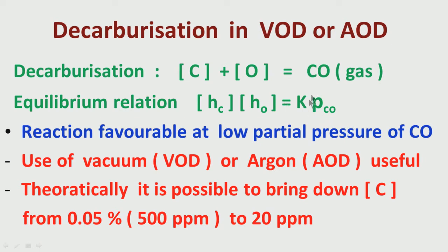Theoretically, it can be calculated from the value of K and the value of the partial pressure of CO. It is possible to bring down carbon from 0.05 percent — that is, 500 ppm, which is the normal level after the BOF basic oxygen furnace — to as low as 20 ppm, either by using vacuum or by using argon. So decarburization is very much possible as a requirement in secondary refining, either by using vacuum or by using argon.